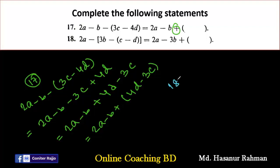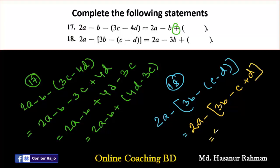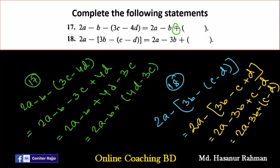Now number 18. Number 18 says: 2a minus 3b plus (c minus d). Removing brackets: minus into minus c gives plus c, minus into positive d gives minus d. At the answer, after 3b there is a positive sign, which we already have. So: 2a minus 3b plus c minus d is the answer of number 18.